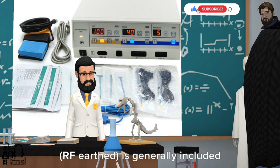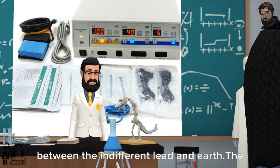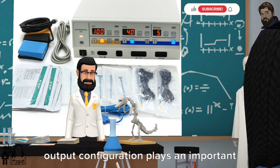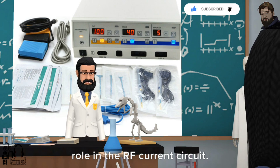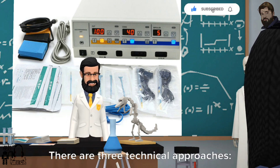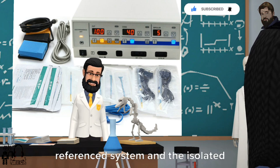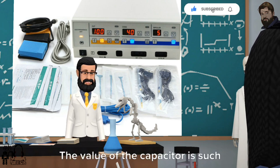The output configuration plays an important role in the RF current circuit. There are three technical approaches: the earthed output system, the earth referenced system, and the isolated system.